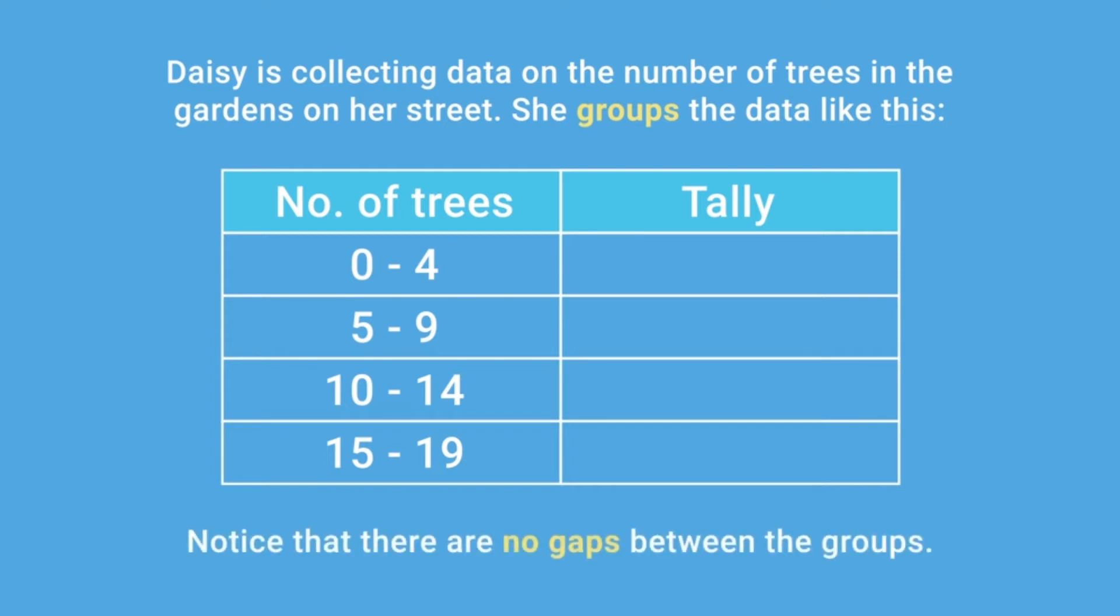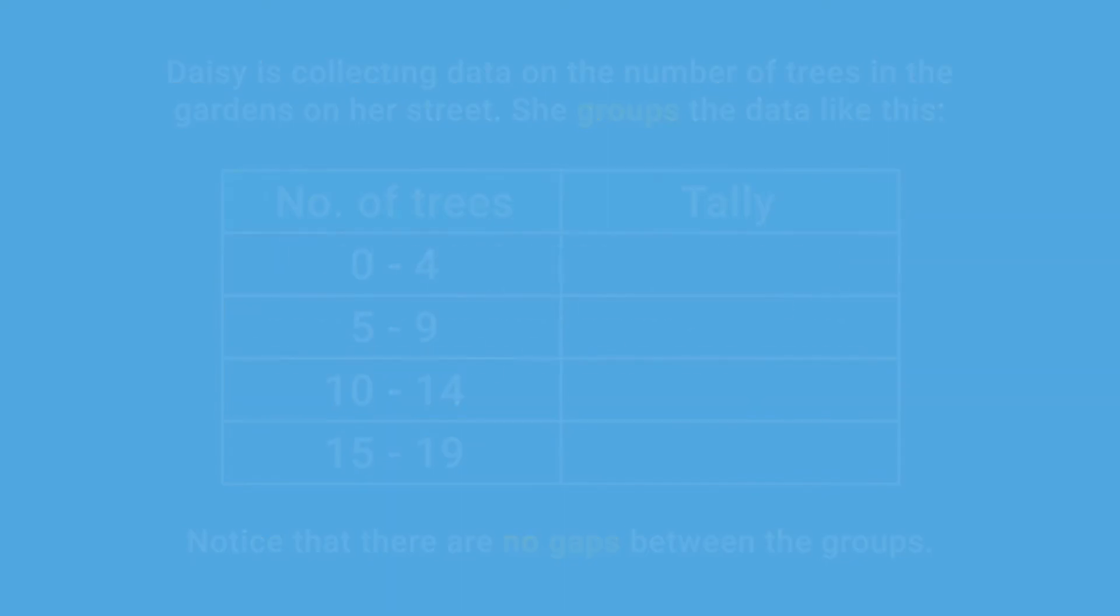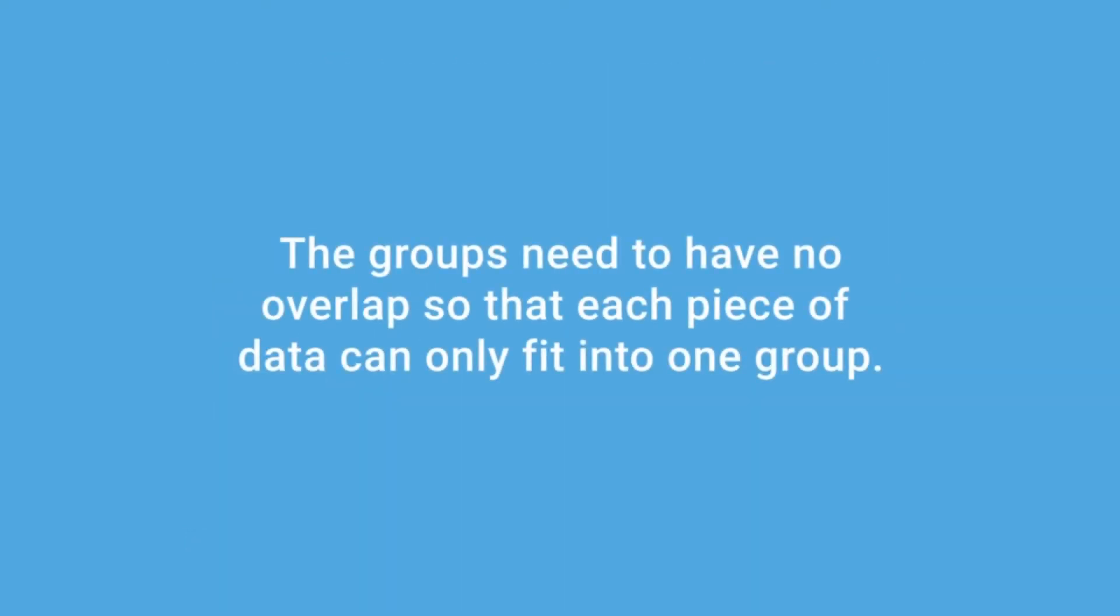Notice that there are no gaps between the groups. The groups need to have no overlap so that each piece of data can only fit into one group.